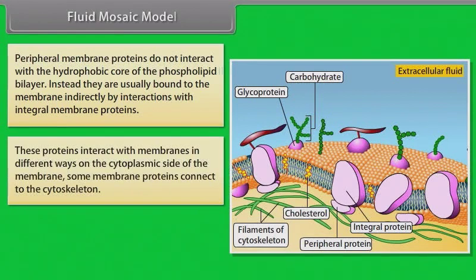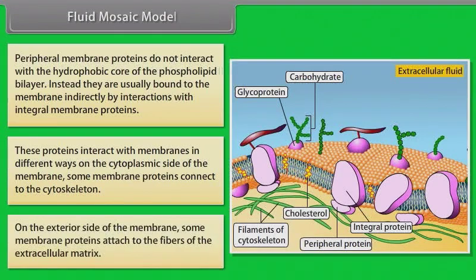These proteins interact with membranes in different ways. On the cytoplasmic side of the membrane, some membrane proteins connect to the cytoskeleton. On the exterior side of the membrane, some membrane proteins attach to the fibers of the extracellular matrix.